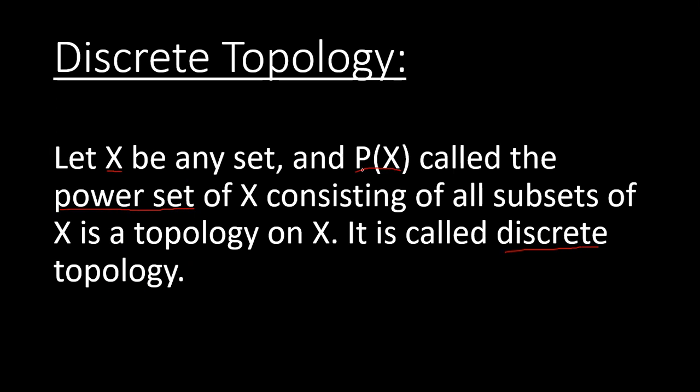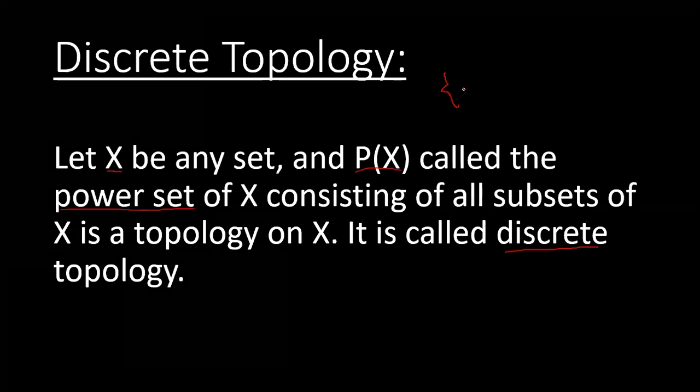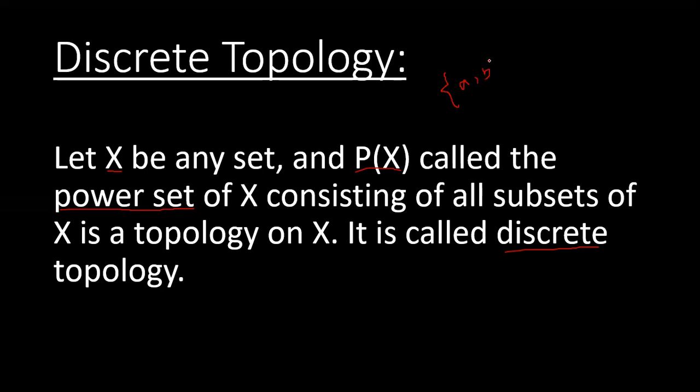In discrete topology, you take all the subsets of X. For example, if you take the set X as {a, b}, then its discrete topology will be: